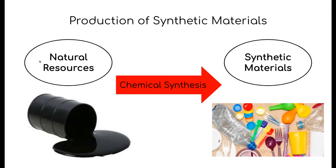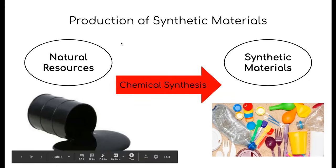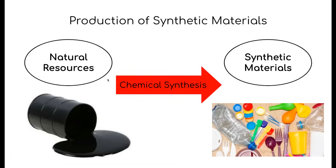So again, a natural resource like petroleum or coal is taken and put through a series of chemical reactions, which we refer to as chemical synthesis, creating a brand new material which we call a synthetic material.